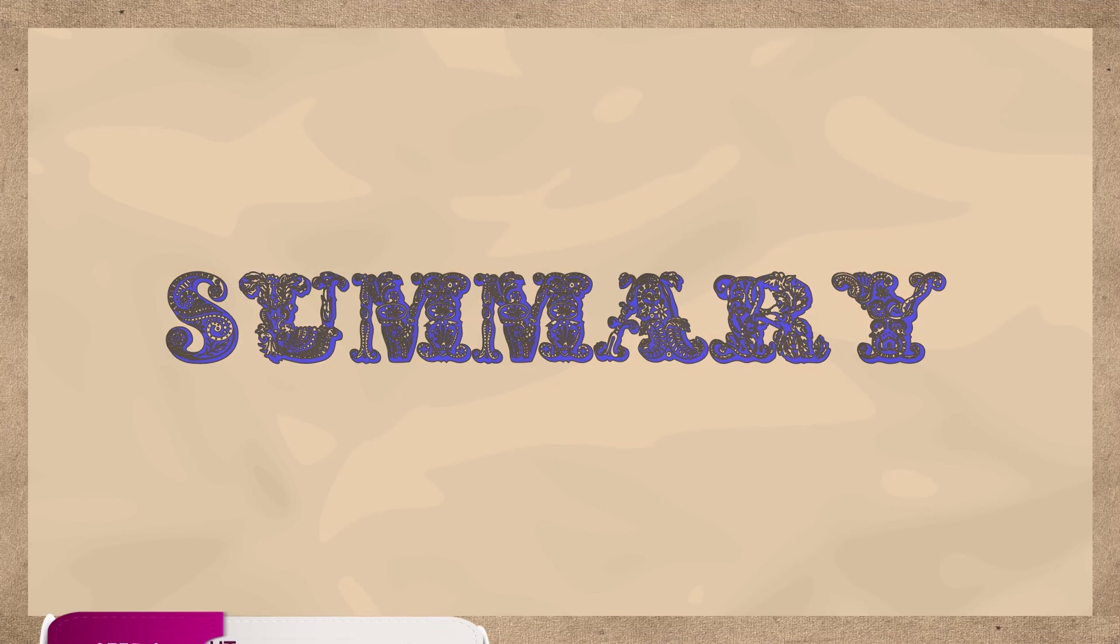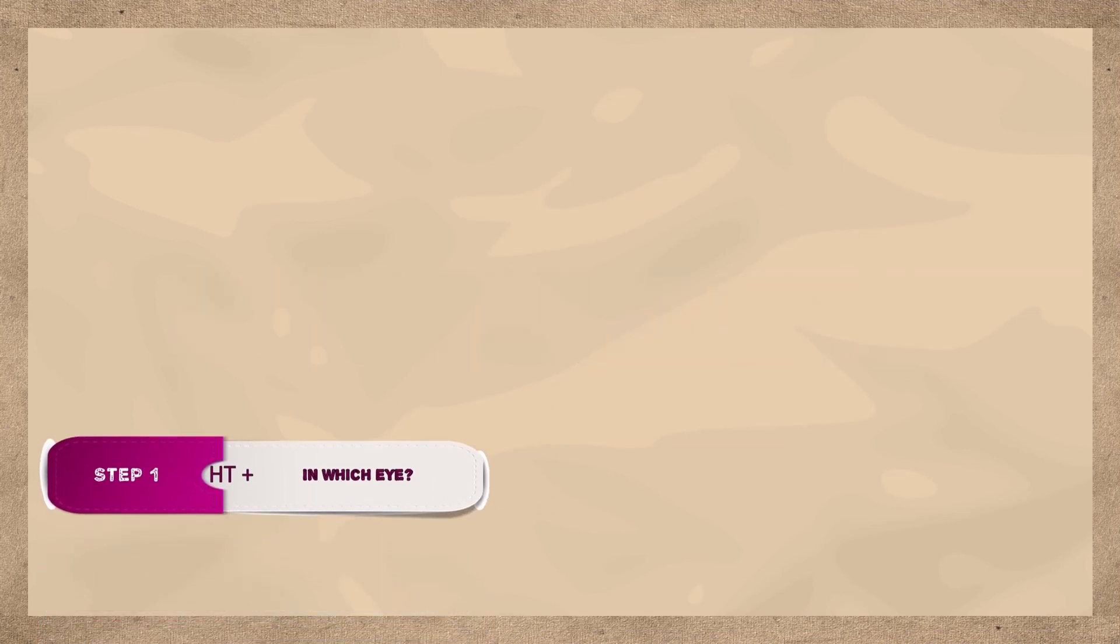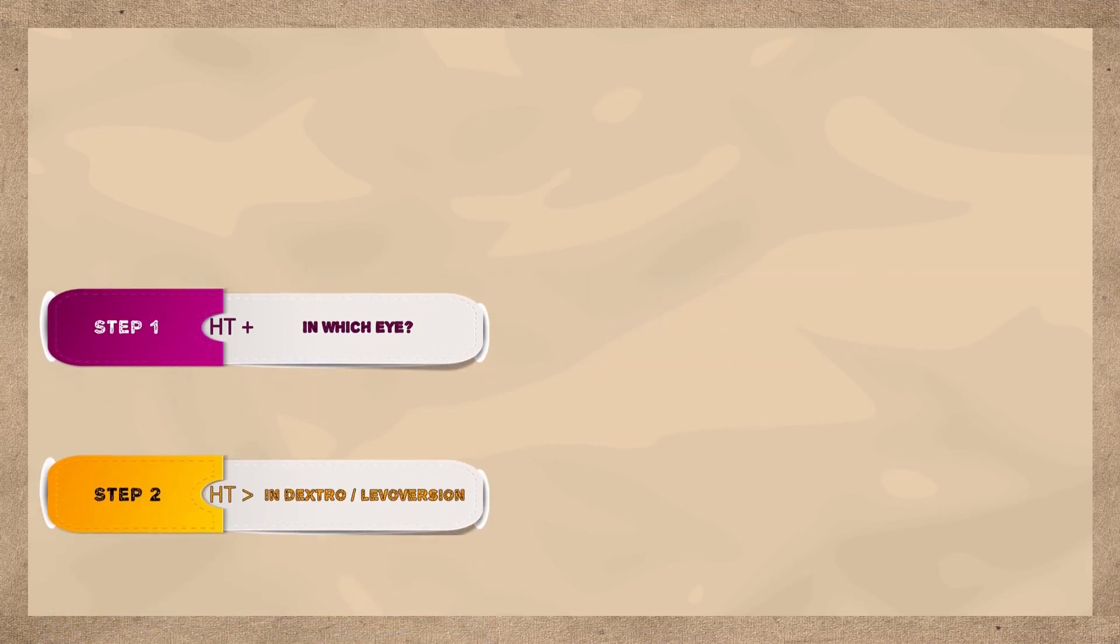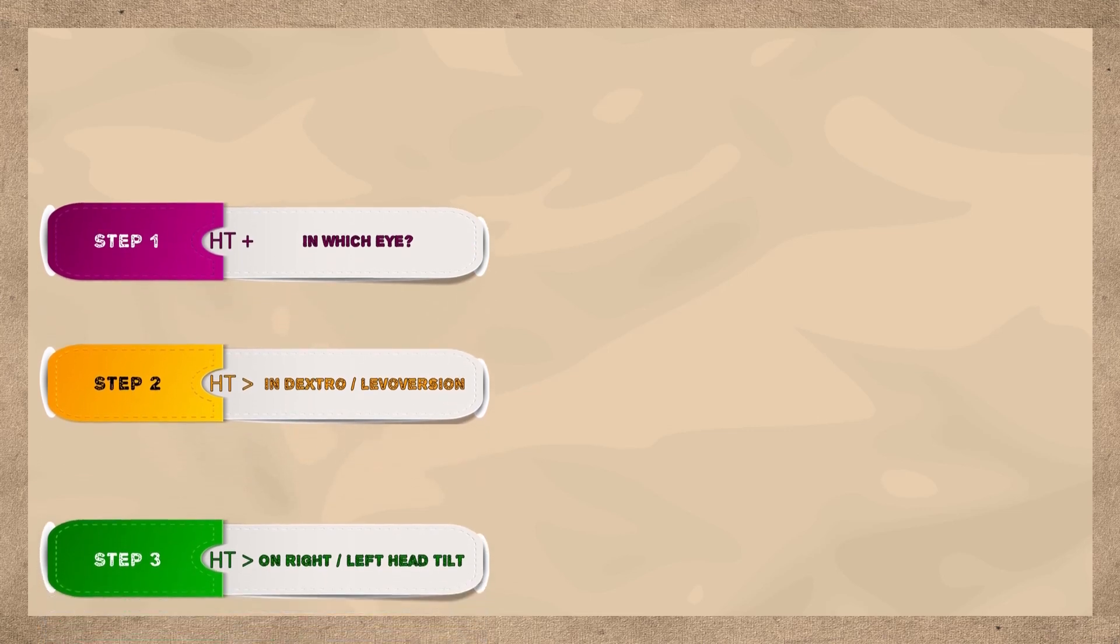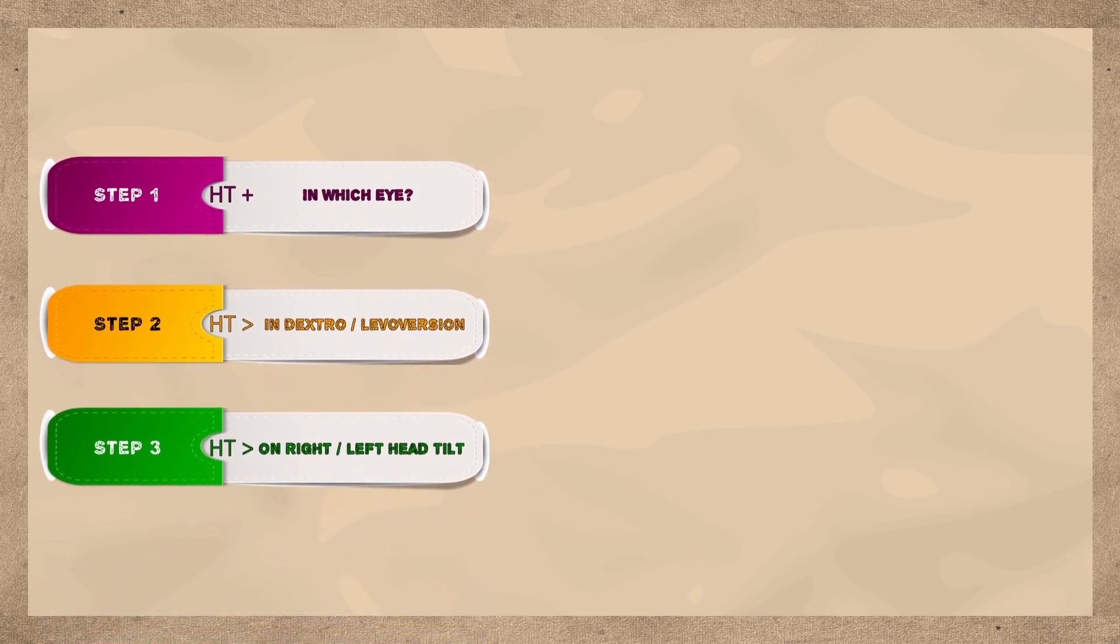So, in summary, the Park's 3-step test consists of determining the side of the hypertropia, whether this hypertropia is greater in right or left gaze, and whether it is greater in right or left head tilt.